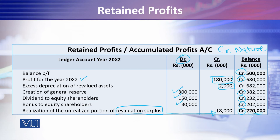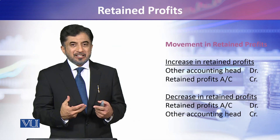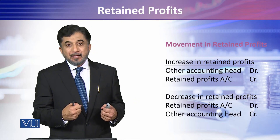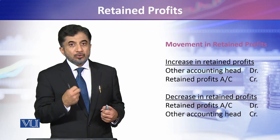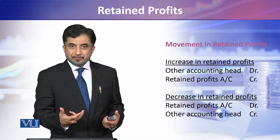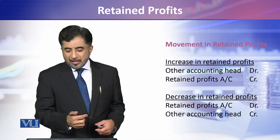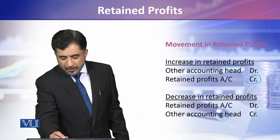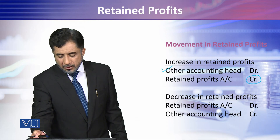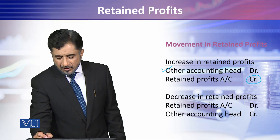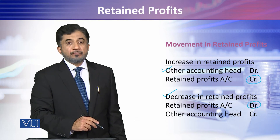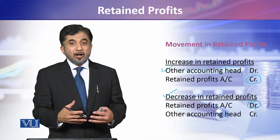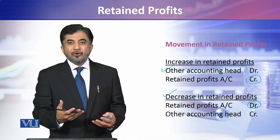The debit and credit accounting behind this: retained earnings or retained profit is a credit-nature account, being an item of owners' equity. Whenever there is an increase, retained profits are credited against the relevant accounting head causing the increase. When there is a decrease, retained profits are debited against the relevant accounting head. This is how we account for movement in the retained profits or accumulated profits.